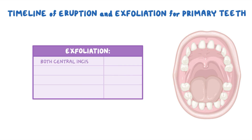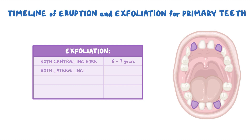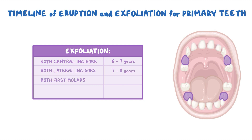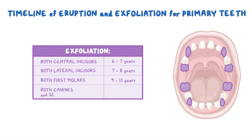Both the central incisors are exfoliated by 6 to 7 years, both lateral incisors by 7 to 8 years, both first molars by 9 to 11 years, and both canines and second molars fall off by 10 to 12 years.